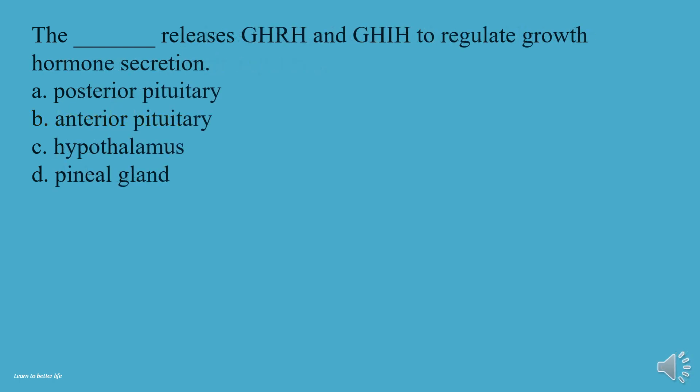What releases GHRH and inhibitory factors to regulate growth hormone secretion? A, Posterior pituitary. B, Anterior pituitary. C, Hypothalamus. D, Pineal gland. The answer is C, Hypothalamus.